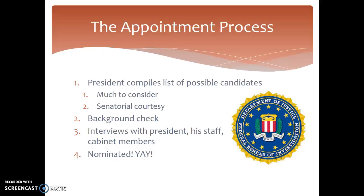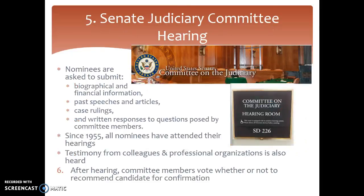They also have to look into the candidate's background — a background check — and the nominee has to have interviews with the president, his staff, and all of his cabinet members. Once that's done, you're nominated. But then you have to go to a Judiciary Committee hearing, where nominees are asked to submit biographical and financial information to ensure no conflicts of interest. They also have to submit a list of past speeches, articles, case rulings, and written responses to questions posed by committee members. A lot of this is covered in the Elena Kagan document from her Judiciary Committee submission.